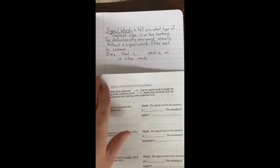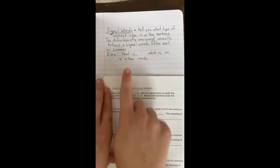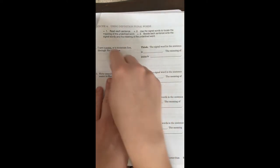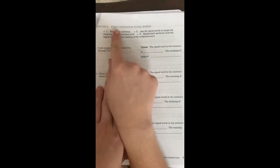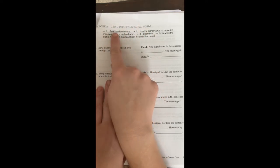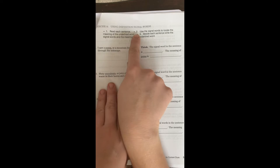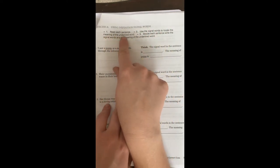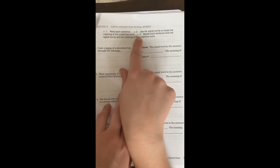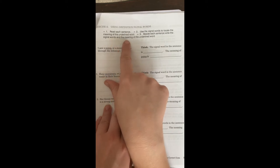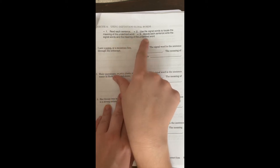So we're going to use those signal words, which we have here as our examples and find them in our packet on page five. So it says exercise A, using definition signal words. One, read each sentence. Two, use the signal words to locate the meaning of the underlined word. Three, beside each sentence, write the signal words and the meaning of the underlined word.